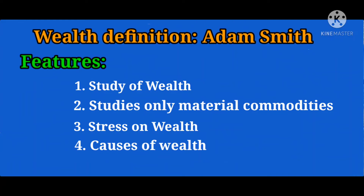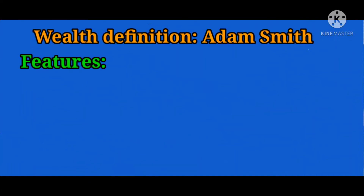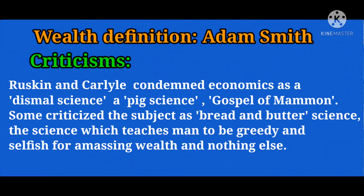The next feature is the economic man. The wealth definition is based on the concept of a man who always acts in his self-interest, leading him to material gains only. However, the wealth definition of the classical economists was criticized by writers like Ruskin and Carlyle, who condemned economics as a dismal science or the gospel of mammon. Some called the subject a bread-and-butter science which teaches men to be greedy and selfish in amassing wealth.